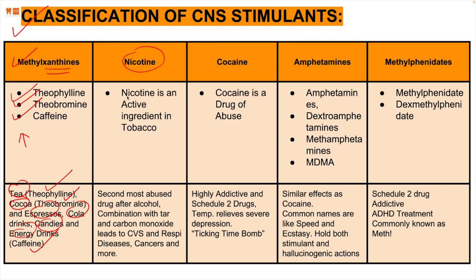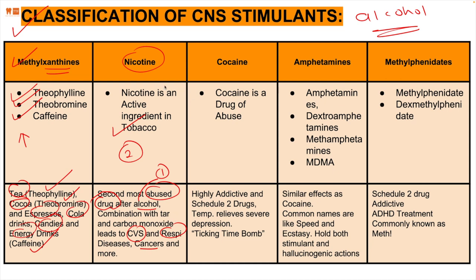Nicotine is an additive ingredient in tobacco and one of the most addictive chemicals in it. It is the second most abused drug after alcohol. Alcohol (ethanol) is the world's number one in addiction capacity. Nicotine combined with tar and carbon monoxide leads to cardiovascular and respiratory diseases, as well as cancers like lung cancer and jaw cancer. It is a schedule two drug and highly addictive, providing only temporary relief from severe depression without treating it.